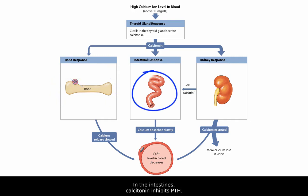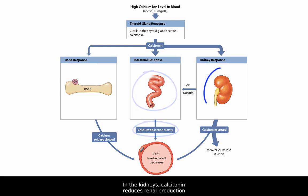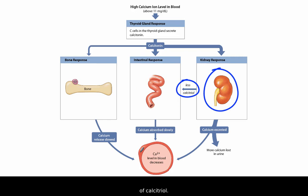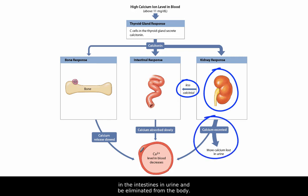In the intestines, calcitonin inhibits PTH, which lowers the rate of calcium absorption. In the kidneys, calcitonin reduces renal production of calcitriol. Calcium, therefore, is more likely to remain in the intestines and urine and be eliminated from the body.